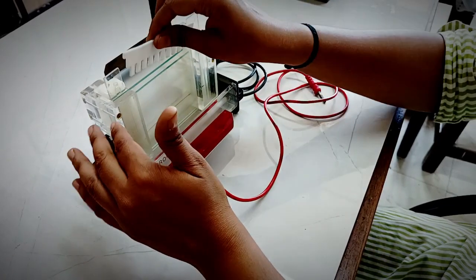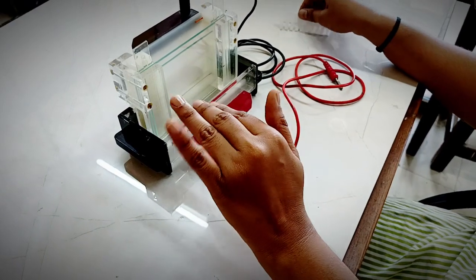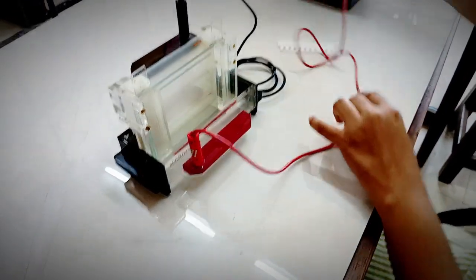you are supposed to remove the comb. The gel will get polymerized, you remove the comb, then you will load the sample and then apply these electrodes to the power pack.